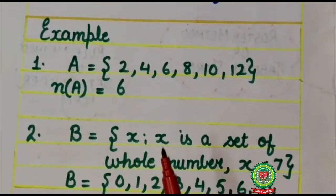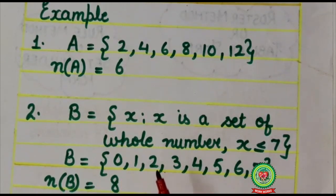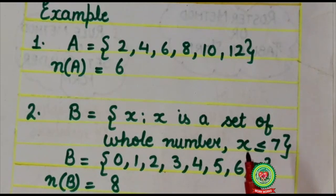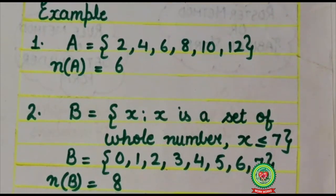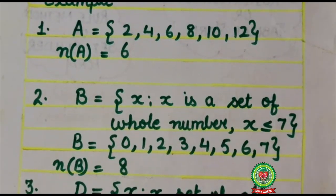Here B set is x such that x is a set of whole numbers where x ≤ 7. It is given in set builder form. So first of all write it into roster form. Here B will come {0, 1, 2, 3, 4, 5, 6, 7}. 7 will also come because here equals to sign is given. So let's count all the numbers: 1, 2, 3, 4, 5, 6, 7, 8. So total 8 elements are there. Its cardinal number is 8. That means it is having countable numbers. Therefore, it is a finite set.